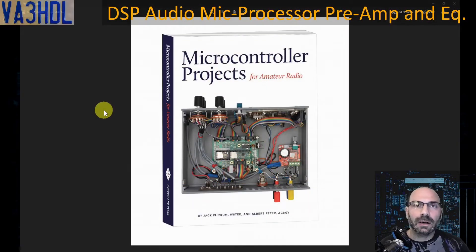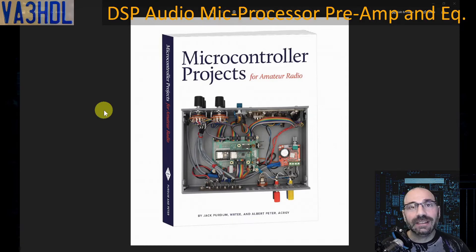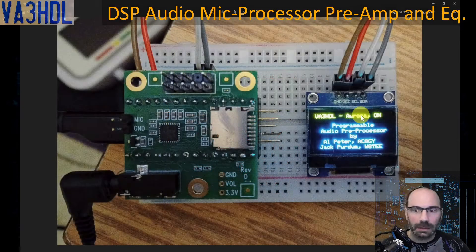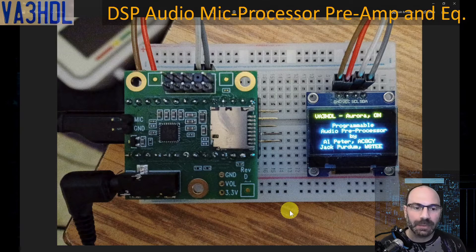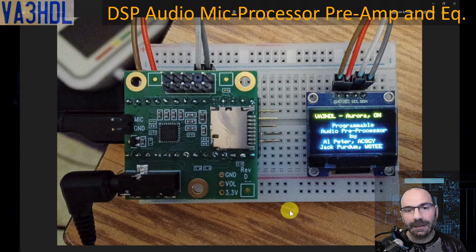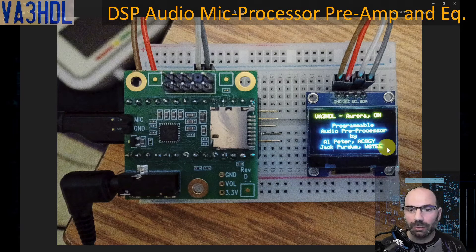If you watched part 1 of this series, you know that I got my inspiration for this project from this book, Microcontroller Projects for Amateur Radio. The project is in chapter 12 of the book. This is when I started breadboarding the project, and we will go over all the parts and connections. Here I got the original code to load and compile on the Teensy.